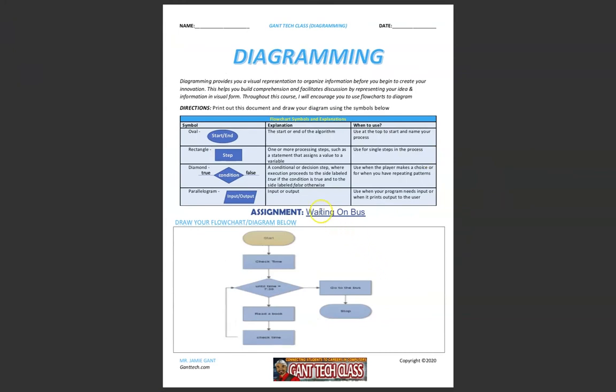Here we have waiting on a bus. We start with an oval. This is a step. We're checking the time, so we use a rectangle. We have a condition. We're waiting until 7:30. If it's not 7:30, we're going to read a book, so that is a step, a rectangle. We check the time again, which is another step. We come back to this condition. Is it 7:30? If it is not, we go down this loop again. If it is, we come over here to the right, and we go to the bus, and then we end our program.